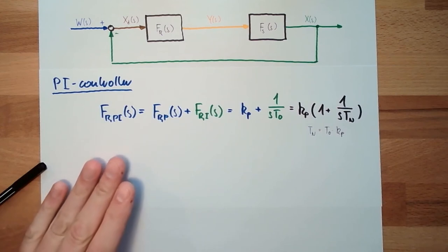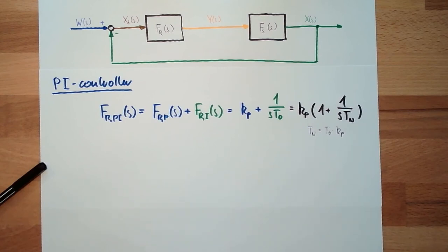And this is a combination then of a fast P-controller at the beginning and an accurate I-controller at the end. This is a good combination for a controller. And this is why it is used very, very regularly in a lot of applications. PI-controller is basically the controller.